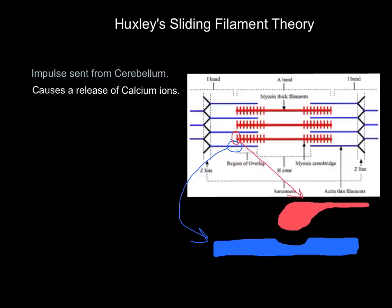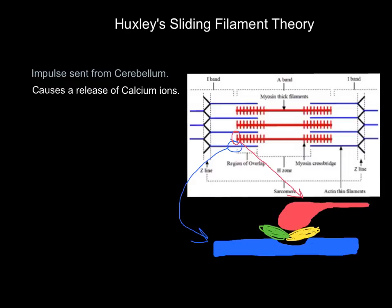This is where calcium comes in. Two other proteins — troponin and tropomyosin — cover the binding site. Their job is to block it so our muscles can relax. If the binding site were always exposed, the myosin head would always attach and our muscles would be in a constant state of contraction. So troponin and tropomyosin cover the binding sites when we're at rest.